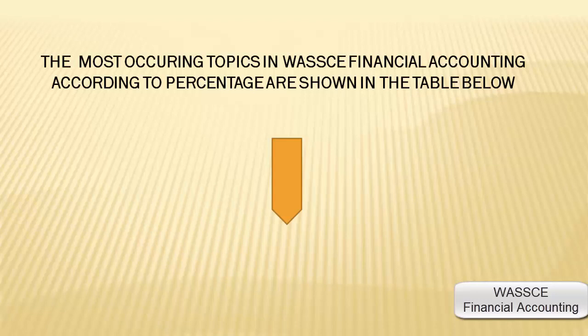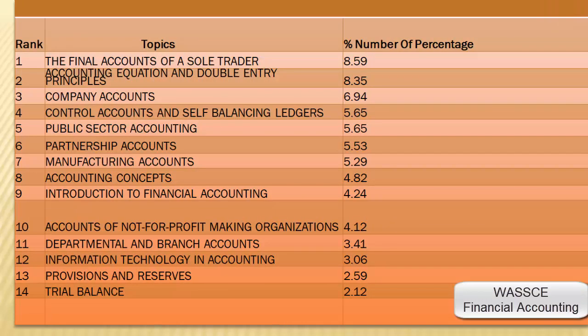The most occurring topics in WAEC Financial Accounting, according to percentage, are shown in the table below. The final accounts of a sole trader has the highest percentage of 8.59%. Accounting equation and double entry principles: 8.35%. Complaint accounts: 6.94%.